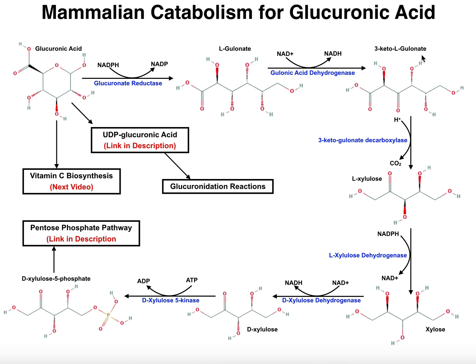3-ketogulonate is going to react with an enzyme called 3-ketogulonate decarboxylase. Essentially, what this is going to do is take this carboxyl group on the one position of ketogulonate and remove it as carbon dioxide. Now, you may think you've seen this molecule L-xylulose before, but you've probably seen its isomer, D-xylulose, which is the form of this molecule that actually enters the pentose phosphate pathway. L-xylulose is not any use to the cell, so we're going to have to actually convert it into the D-isomer.